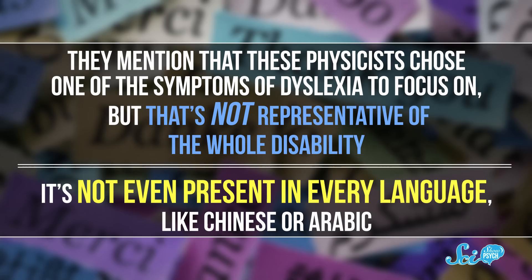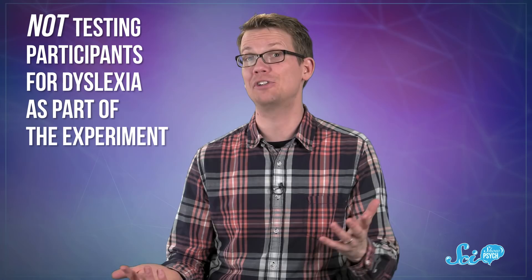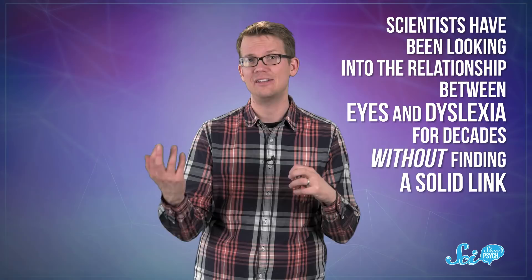Dyslexia researchers have also brought up problems with the methodology of the study, like not testing participants for dyslexia as part of the experiment. And they mentioned that scientists have been looking into the relationship between eyes and dyslexia for decades, without finding a solid link. So, to go against the general understanding, we need more evidence than just one paper involving 60 students.